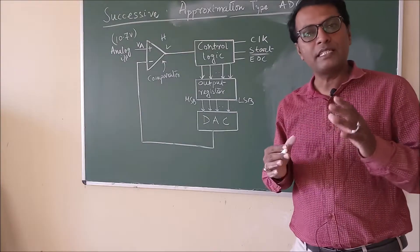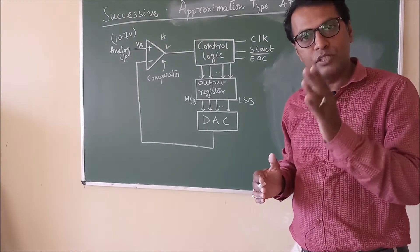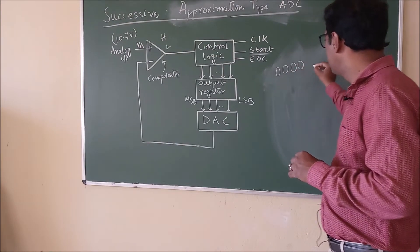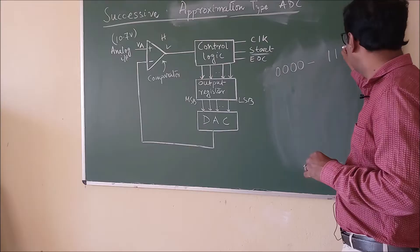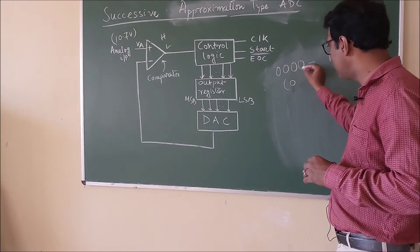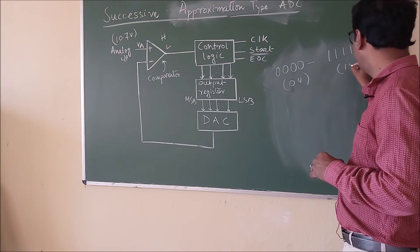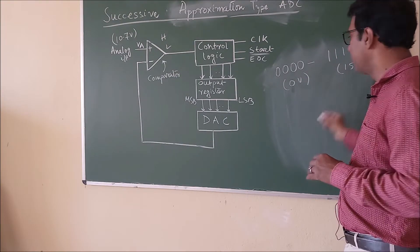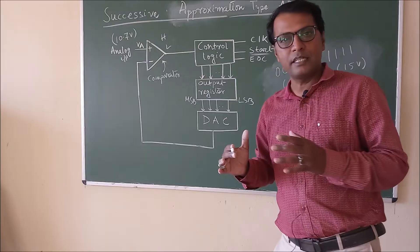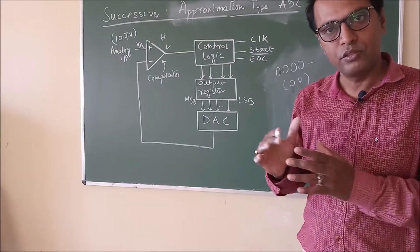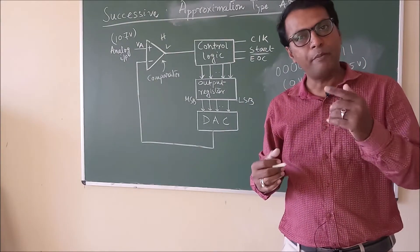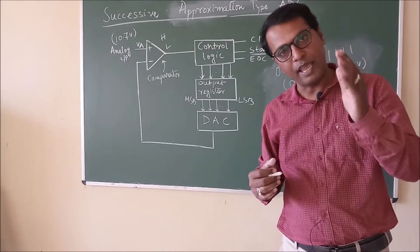The output register is 4-bit, ranging from 0000 to 1111. So 0000 means 0 volts and 1111 means 15 volts — this is the range. The output register is initially 0000 and will be loaded after providing the clock pulse one bit at a time, starting from the MSB.